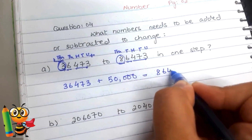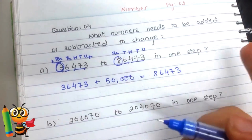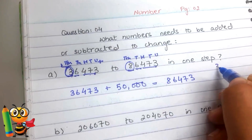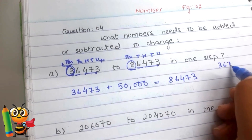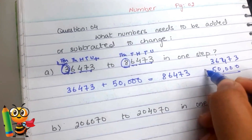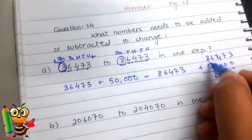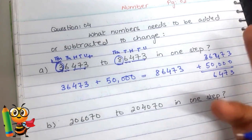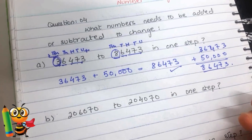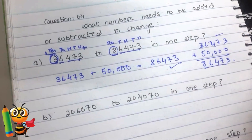You can confirm this answer using your calculator. I'll also show the manual way: 36473 plus 50,000. The last three digits 473 stay the same. Then 6 plus 5 is 11... carrying over gives us 8 in the ten-thousands place, making the result 86473. Our answer is correct. You can also confirm using a calculator.